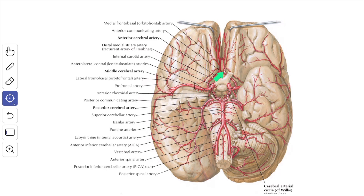This is the median longitudinal cerebral fissure, and the anterior cerebral artery goes to it. Here it comes to lie in close approximation with the opposite anterior cerebral artery. Both anterior cerebral arteries are united by the anterior communicating artery.